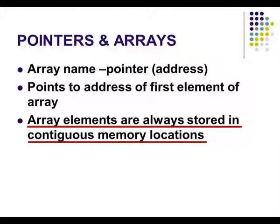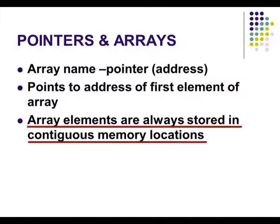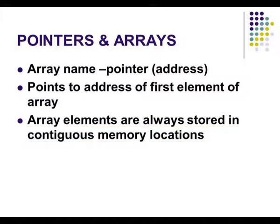When I say data type, array name, and the size of the array, that name itself represents the first element of the array — the place where it is stored. Array elements are always stored in continuous memory locations. This is how an array name itself is treated as a pointer in C.